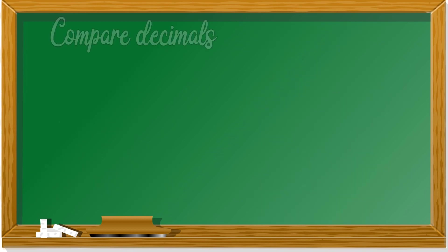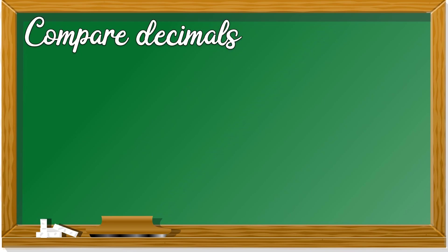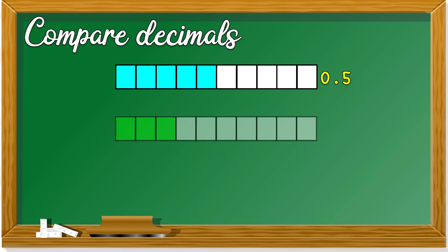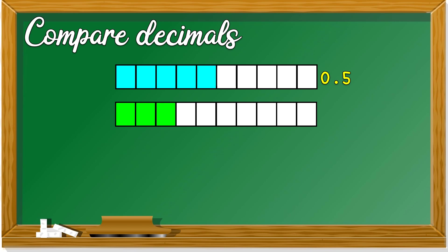We have learned to compare fractions. Now today we are going to learn about comparing decimals. Look at this diagram. What's the decimal for this? How many parts are here? 10, right? And 5 are colored, so it's 0.5. How about this one? What's the decimal? 0.3. Compare the decimals — which one is larger? 0.5, right? So you can say that 0.5 is larger than 0.3.